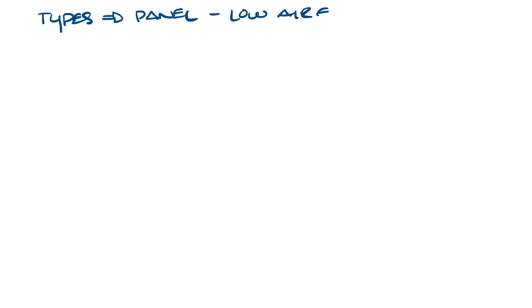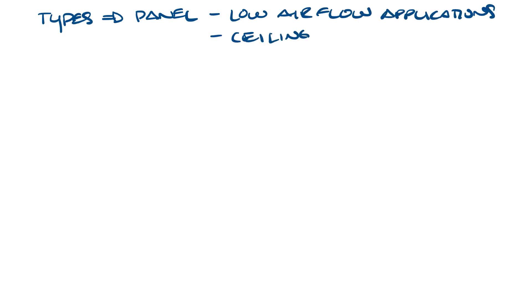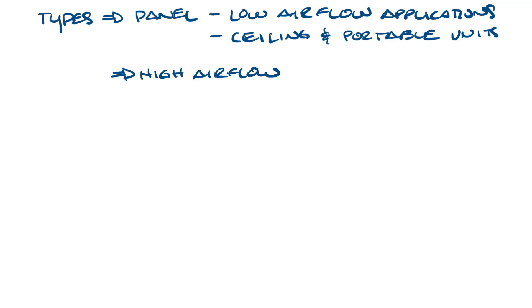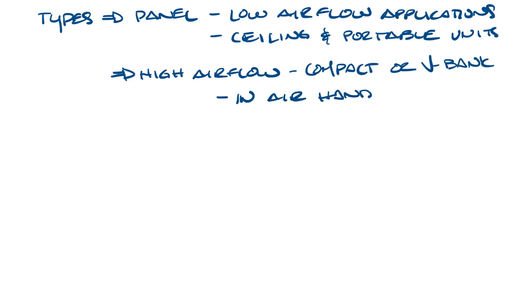There are a couple different types of HEPA filters. There are panel filters, which are used in low airflow applications — for example, you would see these in ceiling applications or portable HEPA units. Next, you have high airflow HEPAs, often referred to as compact or V-bank HEPA filters. You'll see these in air handlers.